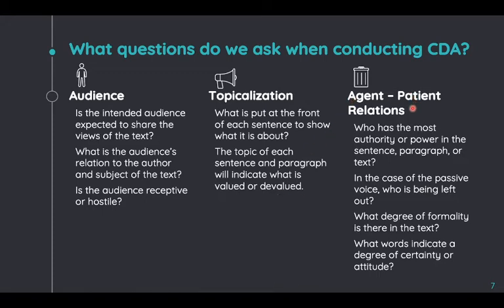Finally, we've got agent-patient relations. This is all about who has the most authority or power in the sentence. If an article or blog post wants to give agency to someone, they'll put them in the active voice. So if an article wants to ascribe positive attributes to a politician or celebrity, they'll make that person very active in what they're doing and emphasize the positive things they did. If they're trying to reduce someone's agency, blame, or power, they might give them a patient relationship — meaning someone else did it, or it's not clear who did it, and it wasn't really that person's fault.